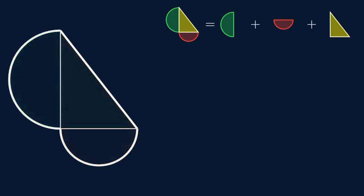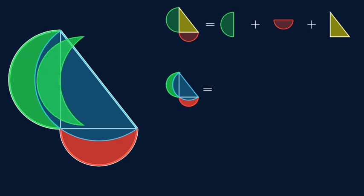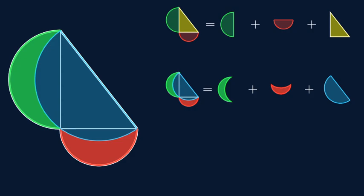We can divide up the same shape in a different way. It's also composed of the green crescent, the red crescent, plus the big blue semicircle. But since they are the same shape, the sums are equal.